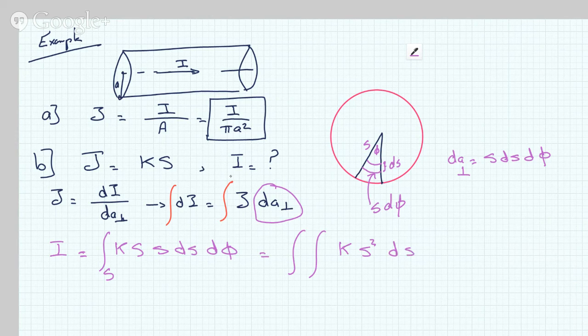That is dS dS dφ. Of course, we are integrating φ from 0 to 2π because we're going around the entire cross-section, and then S goes from 0 to A because the radius is just A.